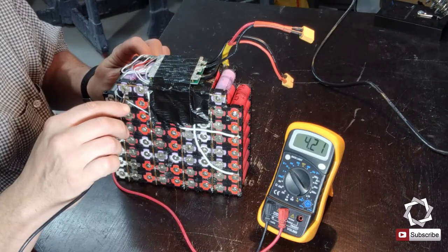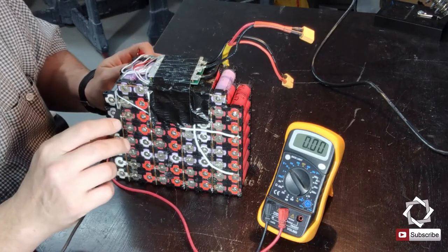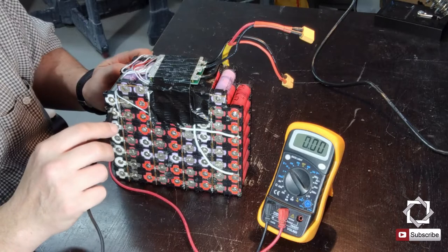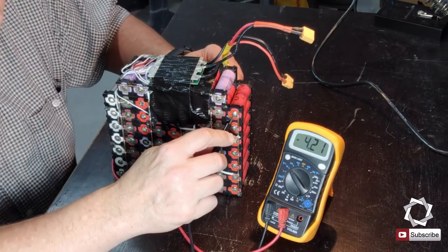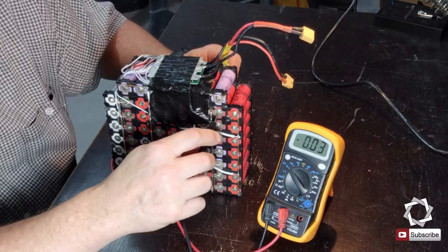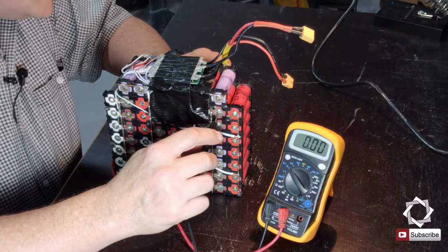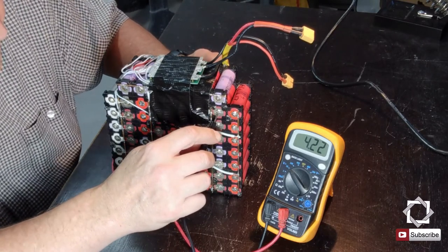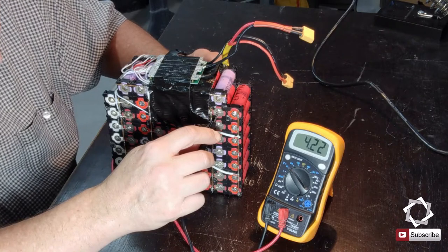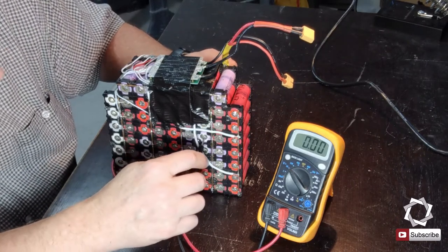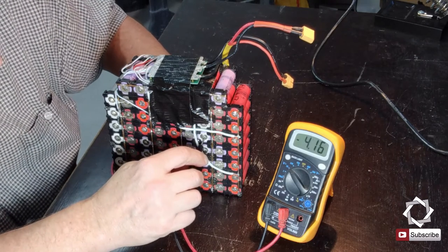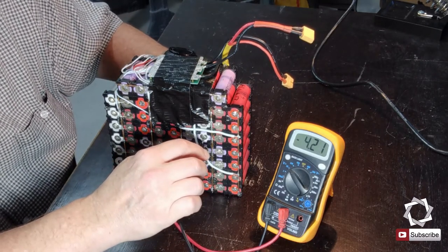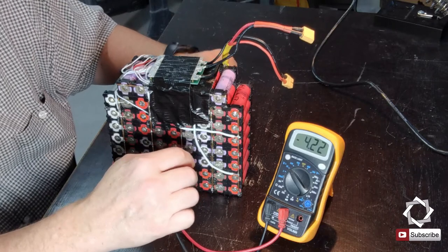This first one here on top, that's 4.21, and that's like a full charge - that is full. And this guy down here is 4.21, so that's good and balanced there. And this one here is 4.21 touching on 2.2, so that one also is in good state. And this one, 4.21, so that's good.